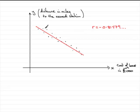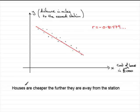And so what is this suggesting? Well essentially it's telling us that houses are cheaper the further they are away from the station, or you could say that the closer you get to the station the more expensive they become.